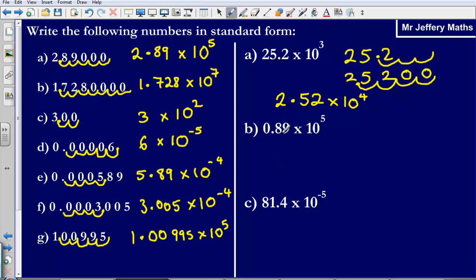Part B, I've got 0.89 times 10 to the power of 5. So again, I'm just going to write out 0.89. And then do exactly as I would do if I was trying to turn it into an ordinary number. So moving the decimal point over by the same number as the power of 10. So 1, 2, 3, 4, 5.